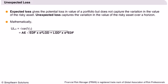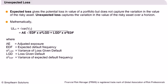The mathematical expression for the unexpected loss is given in the slide, which is a function of adjusted exposure multiplied by a factor that is dependent on default probability, loss given default, and their variances.